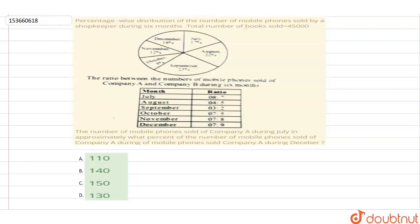It is written that percentage-wise distribution of the number of mobile phones sold by a shopkeeper during 6 months, and total number of mobile phones given is 45,000. Another chart shows the ratio between the number of mobile phones sold of company A and B during these 6 months.